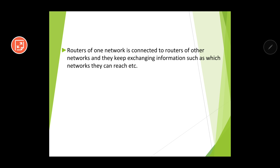Routers of one network are connected to routers of other networks and keep exchanging information, such as which networks they can reach. One router manages certain nodes but stays in sync with routers of other networks. By exchanging this information, they are able to route packets efficiently. The best path is required so that the time for receiving packets is reduced, which increases speed.